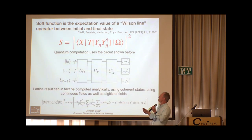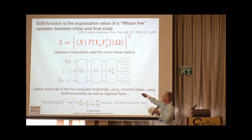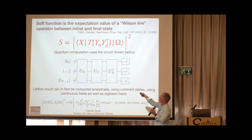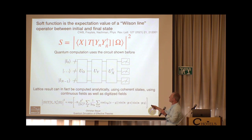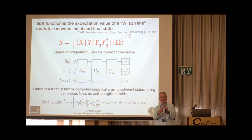As a proof of concept, we actually tried to compute something like this. The soft function requires: preparing the vacuum state of the field theory, acting with a particular operator written in terms of fields, and measuring the overlap with some final state X. We worked this out in a simpler case — scalar field theory — and showed you can construct a quantum circuit that directly implements the soft function.